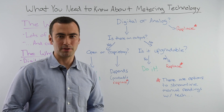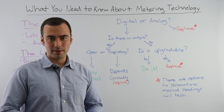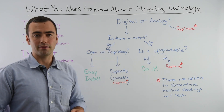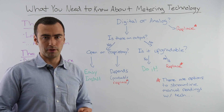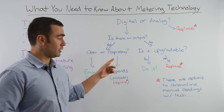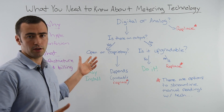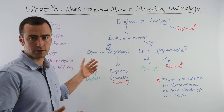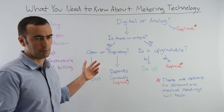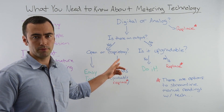If your existing meters are digital, the main thing to determine is whether or not they have a machine-readable output. If they do, it could be sending data over an open protocol such as Modbus, BACnet, or even a simple pulse output — or it could use a proprietary protocol.